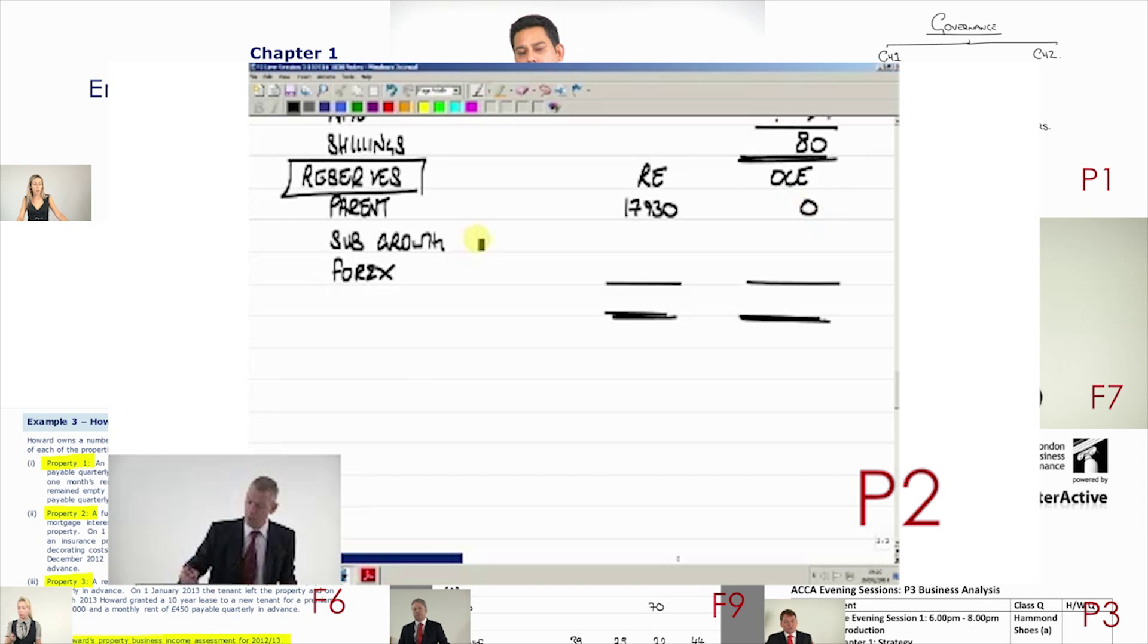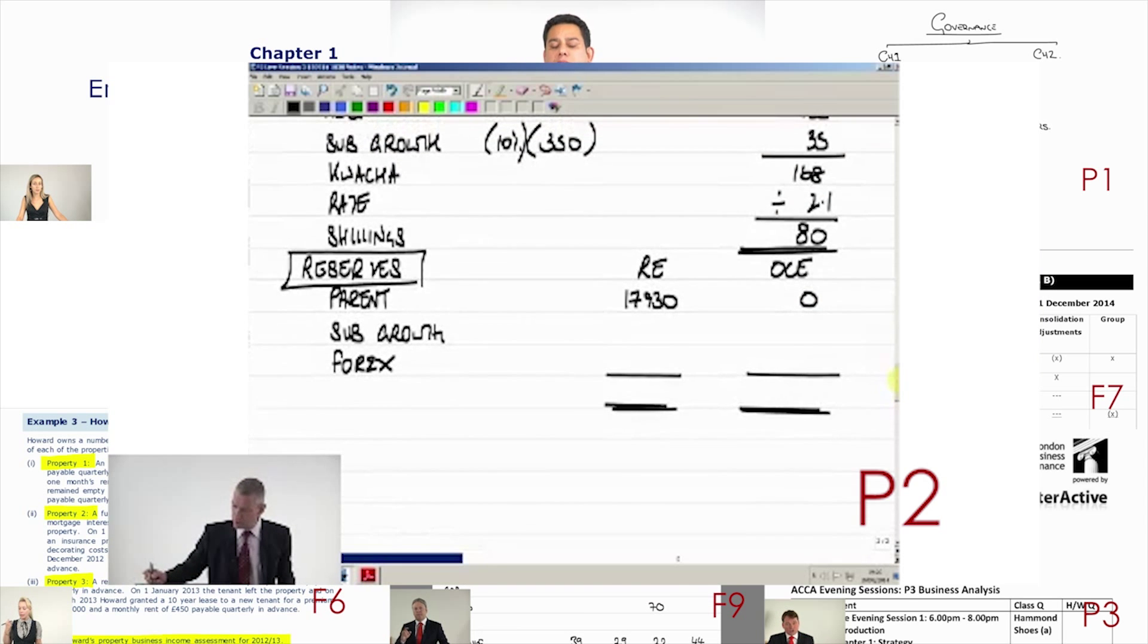And coming back to the retained earnings, we've got sub-growth. We've got the numbers from above. You just take the numbers from above and change it.